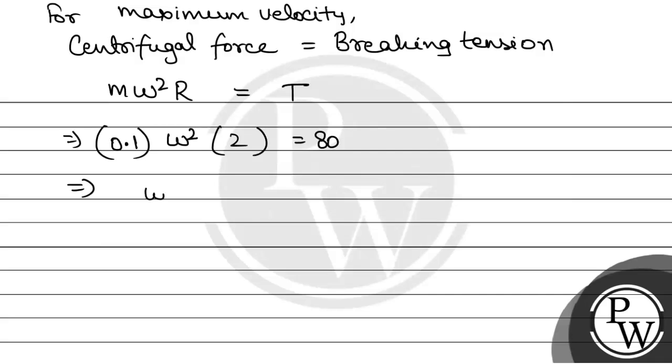So from here, we will have omega squared is equal to 80 by 0.2, that is equal to 400. So omega will be equal to 20 radian per second. This is the maximum angular velocity.